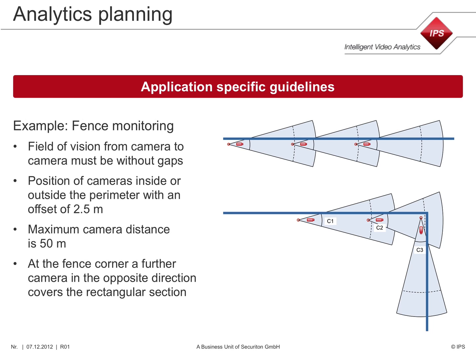In the initial example we will plan fence monitoring. From the illustration we see cameras located inside a fence. At the fence corner, camera C2 only covers a section parallel to the fence but does not cover the rectangular section. A camera looking in the opposite direction is required here — in this example it is C4.